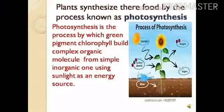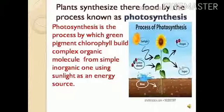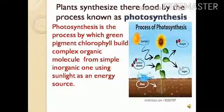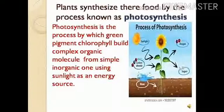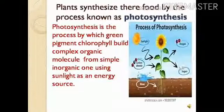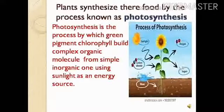Autotrophic plants carry out the process known as photosynthesis. 'Photo' means light, 'synthesis' means synthesizing. Photosynthesis is a process by which plants containing the green color pigment — chlorophyll — build complex organic molecules from relatively simple inorganic molecules such as sunlight, water, and carbon dioxide. In this process, several steps and intermediate compounds are formed.